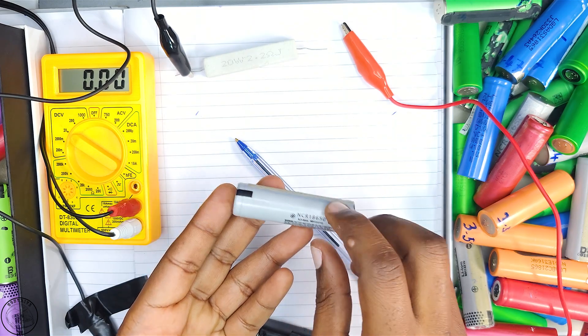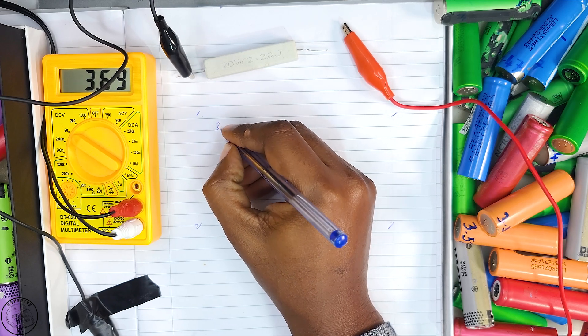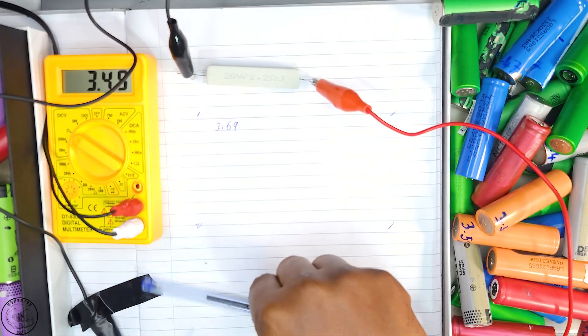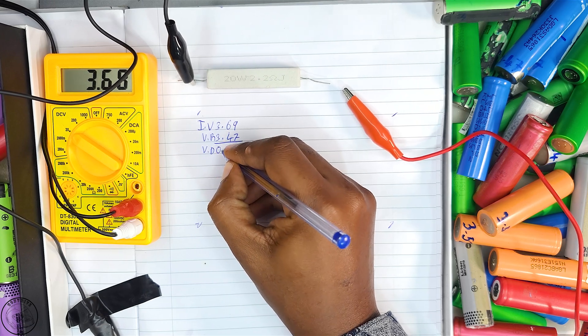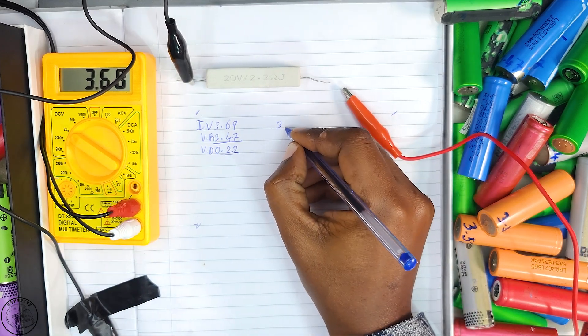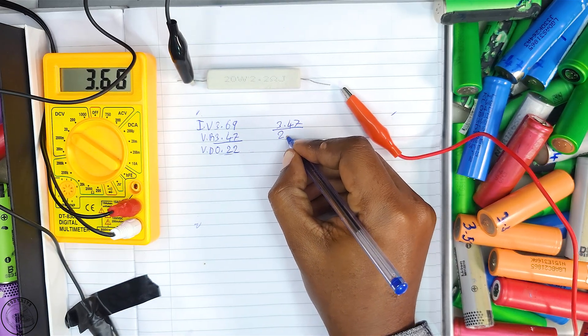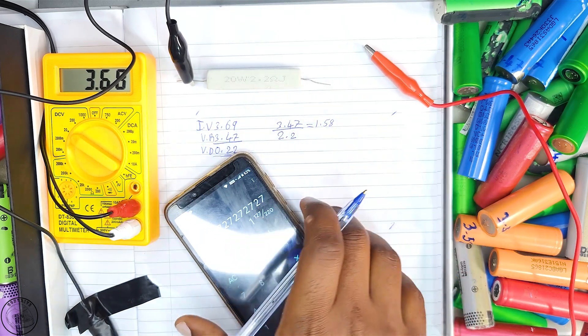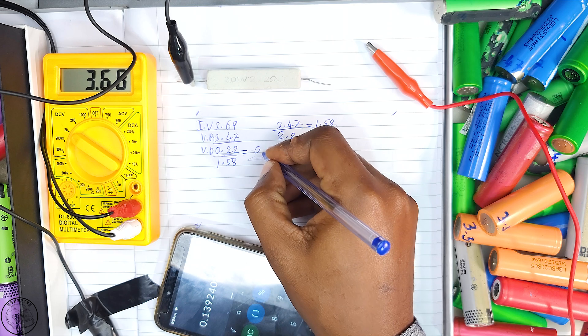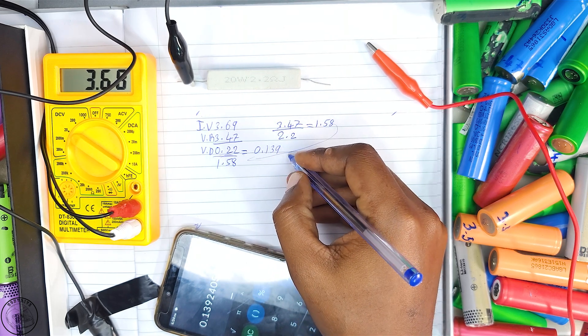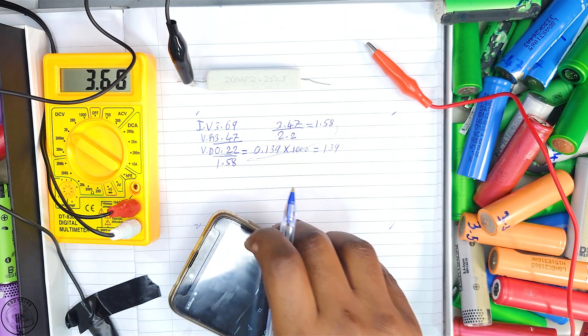I started testing with a Panasonic cell from Japan. Initially, it showed 3.69 volts open circuit. After connecting my 2.2 ohm resistor, voltage dropped to 3.47 volts, a 0.22 volt drop. I calculated current as 3.47 volts divided by 2.2 ohms, which equals approximately 1.58 amps. Then I calculated internal resistance by dividing 0.22 volts by 1.58 amps, yielding 0.139 ohms or 139 milliohms.